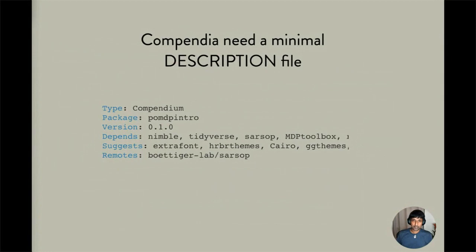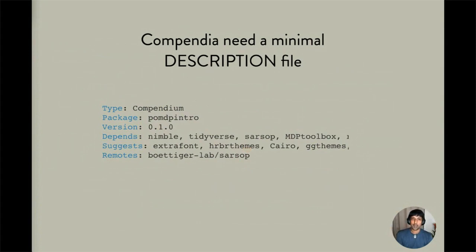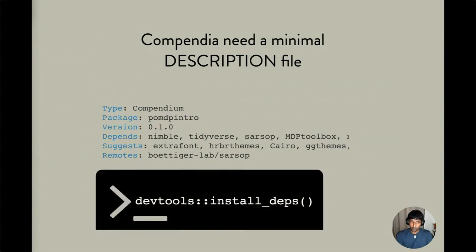The description file is composed of simple key-value pairs in a format called the Debian control format. If you'd like to turn a collection of code into a compendium, the simplest thing you can do is add a description file similar to what you've seen in many R packages. It doesn't have to be comprehensive — it just needs a few required fields, such as a package type of compendium, a name, a version number, and listed dependencies, including ones available only on GitHub. So far, though, we've only listed dependencies, not their exact versions.